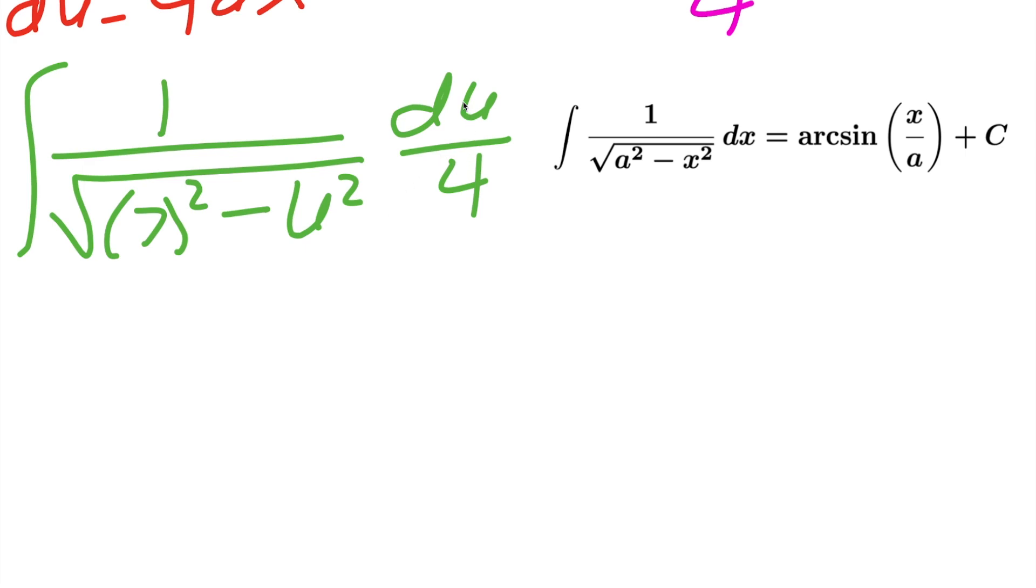So let's clean this up a little bit. Instead of du divided by 4, you can put in the front 1 divided by 4, the integral of 1 divided by the square root of 7 squared minus u squared du.